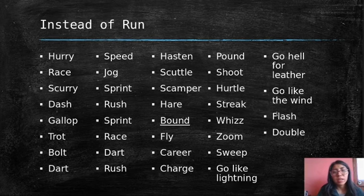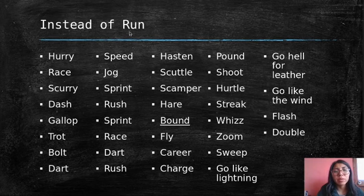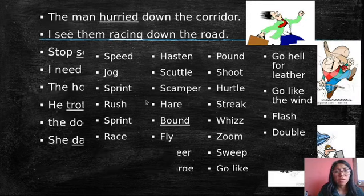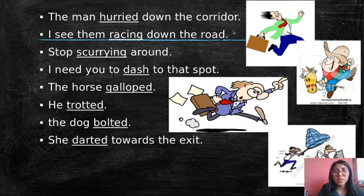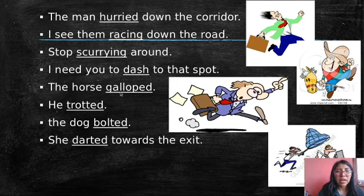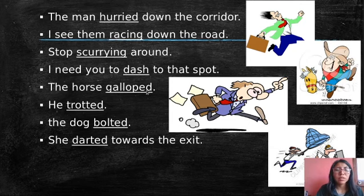Those words you can use in the same way as 'run.' They are verbs — you can use them just like that word. They are synonyms. We are going to review some examples: 'The men hurried down the corridor.' 'I see them racing down the road.' 'Stop scurrying around.' 'I need you to dash to the spot.' 'The horse galloped.' 'He trotted.' 'The dog bolted.' 'She darted towards the exit.'